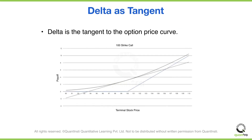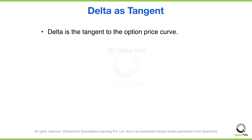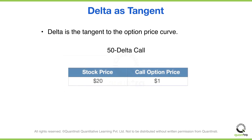Delta is the tangent to the price curve. Equivalently, it is the amount that the option price changes if the stock moves by $1. For example, a 50 delta call is worth $1. If the stock increases by $1, the call increases by $0.50.